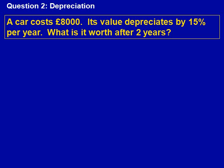Here's our depreciation question. A car costs £8,000. Its value depreciates by 15% per year. What is it worth after two years? We start this question the same as compound interest except we're taking away the percentage. It's going down by 15% per year, so we have 100% take away 15% which gives us 85%. As a decimal, divide by 100, this is 0.85.